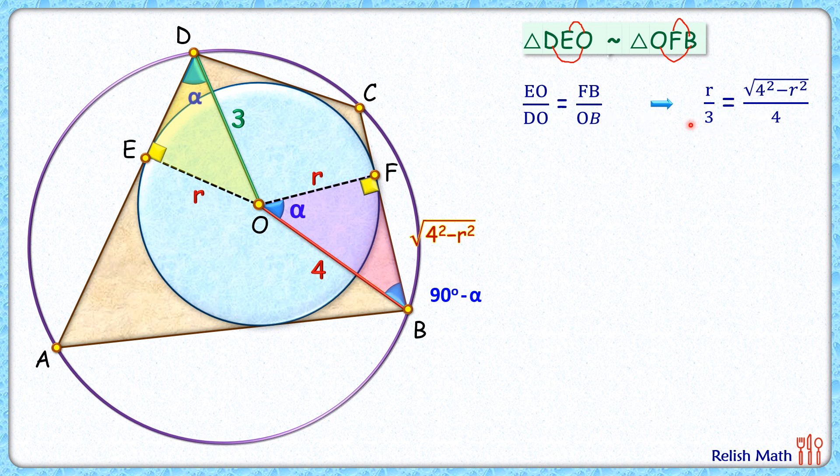Now this is an equation in variable r. To solve it let's square both sides. LHS will be r squared by 3 squared, RHS the square root will get cancelled and denominator will be 4 squared. Now let's divide this 4 squared by 4 squared here. So we get the RHS as 1 minus r squared by 4 squared.